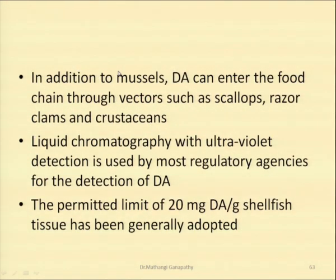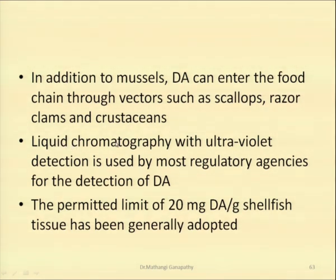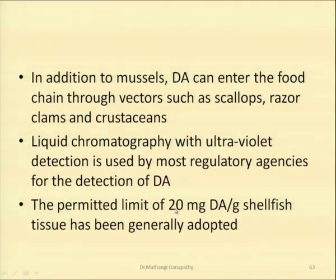In addition to mussels, domoic acid can enter the food chain through vectors like scallops, razor clams, and crustaceans. Liquid chromatography with ultraviolet detection is a method used by most regulatory agencies for the detection of domoic acid. The permitted limit of 20 milligrams domoic acid per kilogram shellfish tissue has been generally adopted as a safety measure.